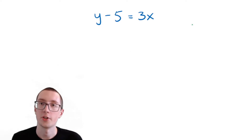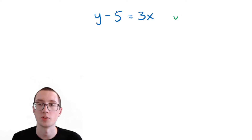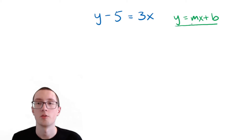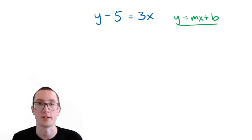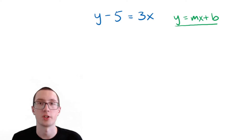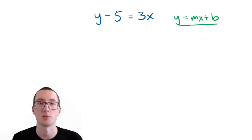If you're taking algebra class right now, you might know that the equation for a straight line is y equals mx plus b. This is the equation that all straight lines are in, but this equation doesn't apply if you have a curved line or something else that's not a straight line. Which means if we want to figure out if this equation is a straight line, all we need to do is try to make it y equals mx plus b. If it turns into y equals mx plus b, then we have a straight line. If it's impossible, then it's not a straight line.